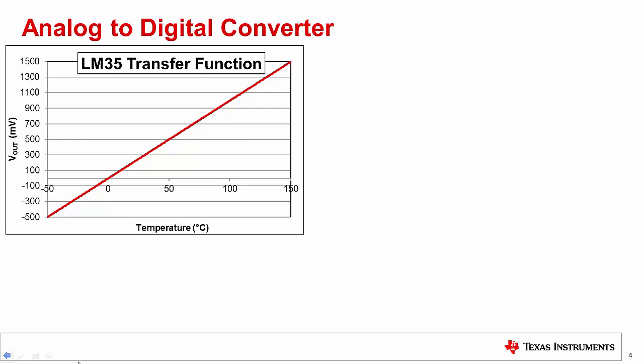ADCs are used to convert analog signals into digital ones. The graph on the left-hand side of this slide shows the LM35 transfer function. Notice that the potential output voltage of the LM35 goes up to 1.5 volts.